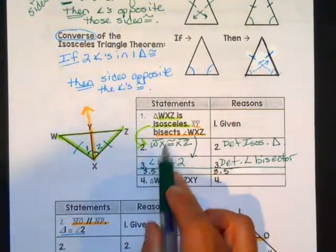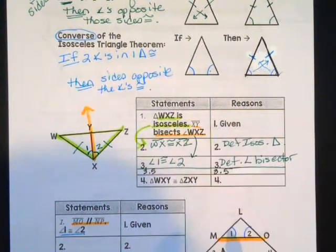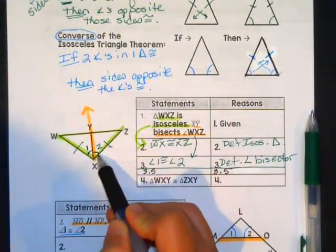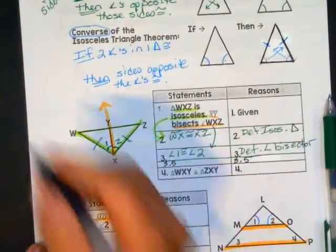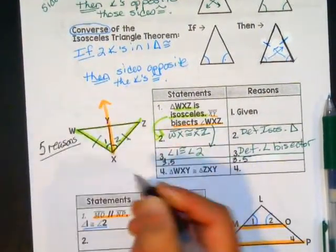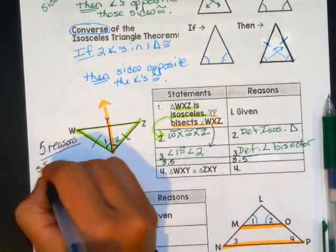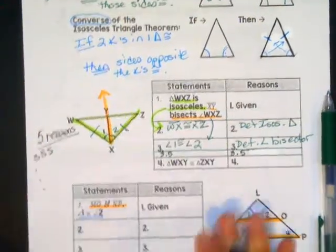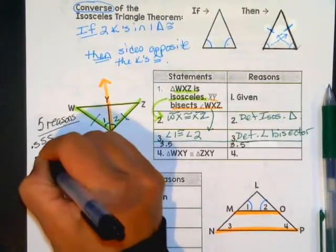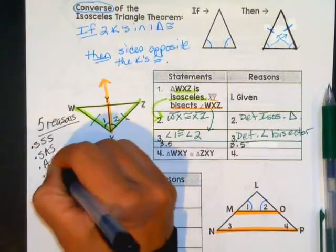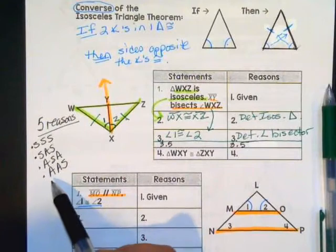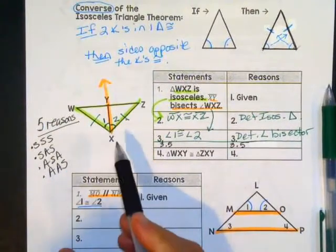That given information is my reason. I have a pair of sides congruent in both triangles and a pair of angles congruent. We have four — and will have a total of five — reasons triangles can be congruent: side-side-side, side-angle-side, angle-side-angle, angle-angle-side. Remember, there is never an angle-side-side. I need another pair of angles or another pair of sides.